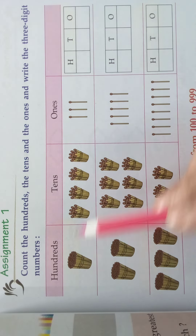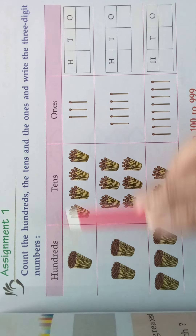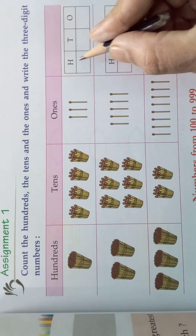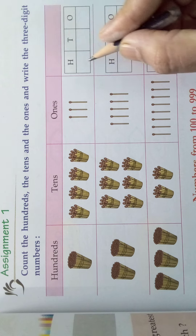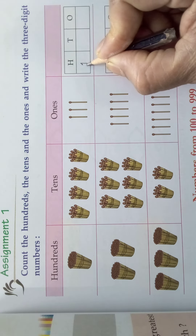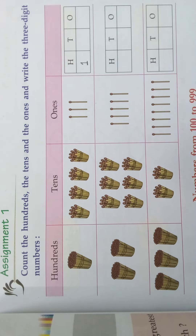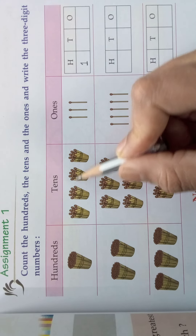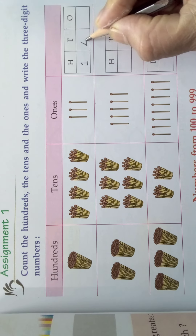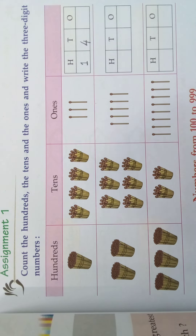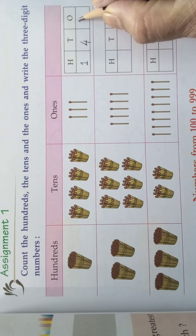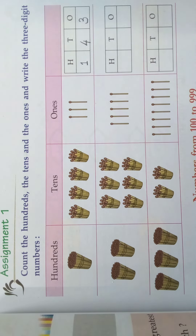Now, how many hundreds are there? How many tens are there? How many ones are there? How many hundreds are there? That we will write in the hundreds column. Only one hundred is there. How many tens are there? One, two, three, four. So we write four here. How many ones are there? One, two, three. So three ones are there.